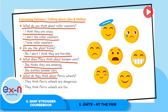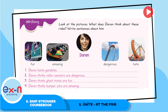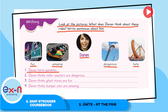What do you think about Ferris wheels? They think Ferris wheels are dangerous. They think Ferris wheels are fun. What does Darren think about these rides? Write sentences about him. Fun, amazing, dangerous, and hate are the adjectives and verb that Darren uses. Darren hates gondolas. Darren thinks rollercoasters are dangerous. Darren thinks ghost trains are fun. Darren thinks bumper cars are amazing.